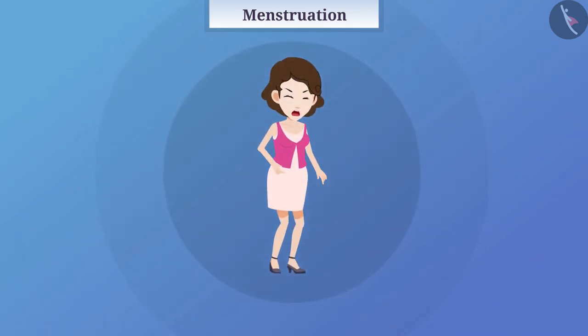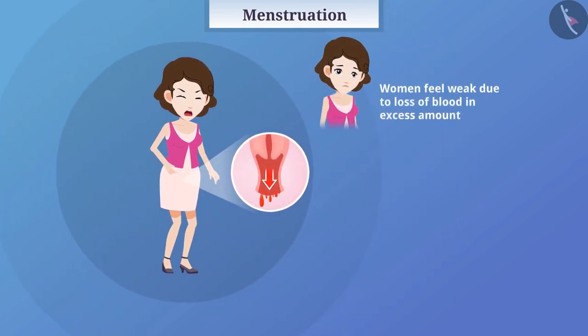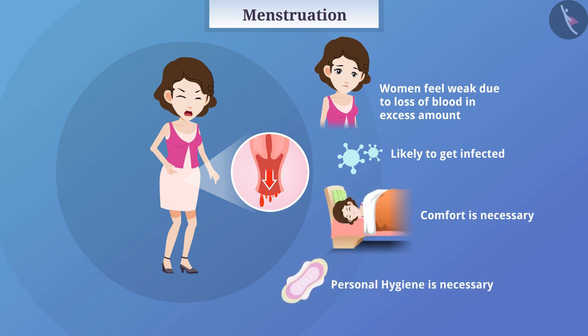A woman has a lot of pain during menstruation. Due to loss of blood and excess amount, women also feel weak. Women are more likely to get infected during this period. Therefore, during this period, comfort and personal hygiene are necessary.